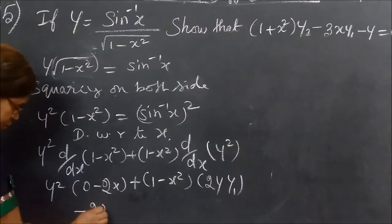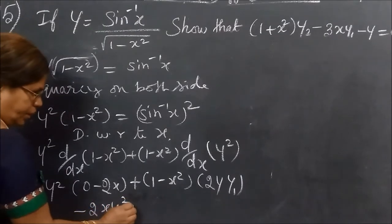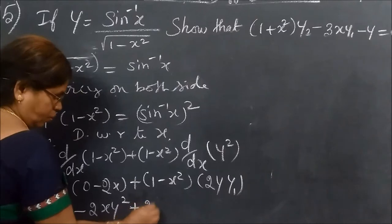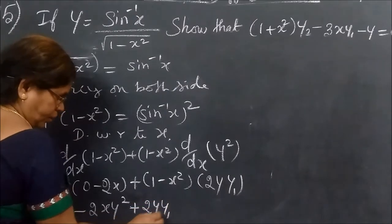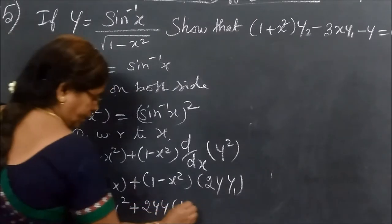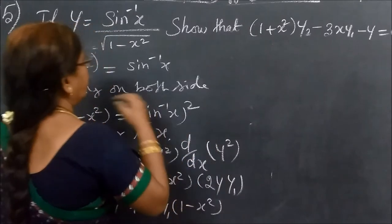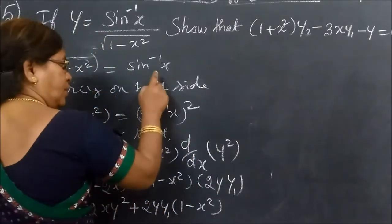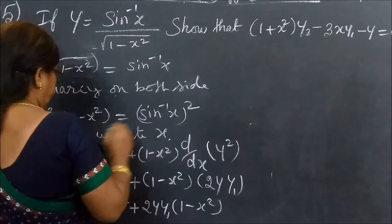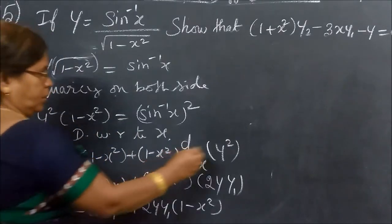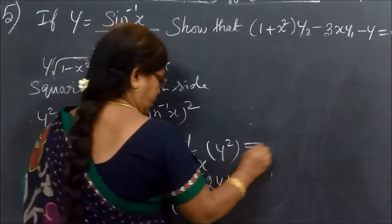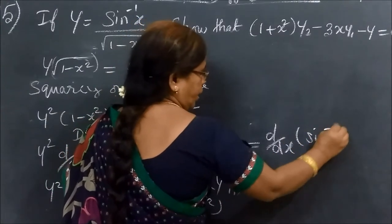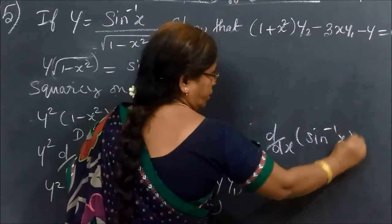So we get minus 2X·Y², then plus 2Y·Y1 bracket (1 minus X²). This is now differentiated and equal to d by dX of sin inverse X whole square.